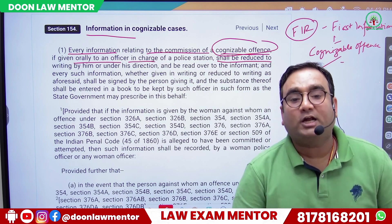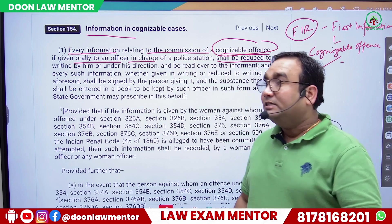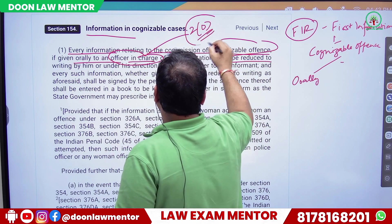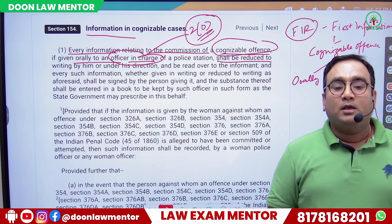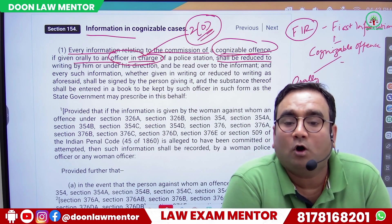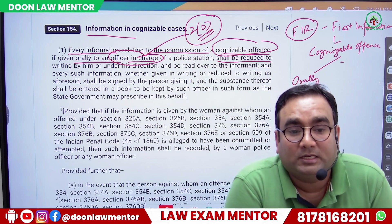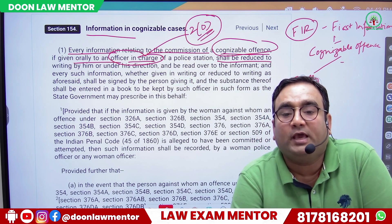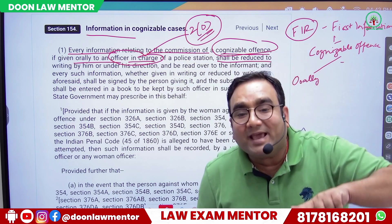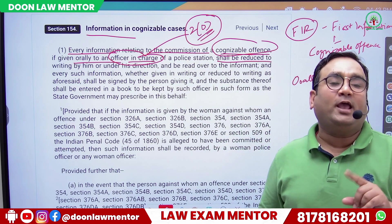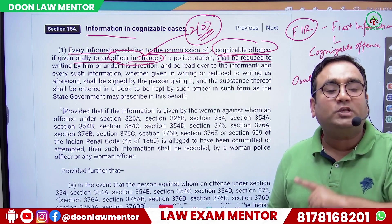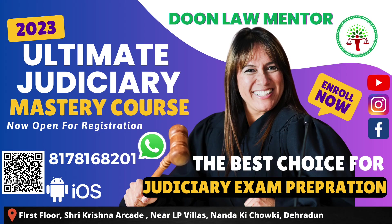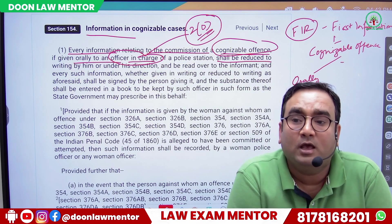Officer in charge of the police station does not simply mean any constable or above. As per Section 2(O) of CrPC, which we covered in the last class, 'police officer in charge' is specifically defined. When the regular station house officer is not available or unable to perform duty, then any other police officer present who is next in command can serve — but there is a condition: that officer must be of a rank above head constable.